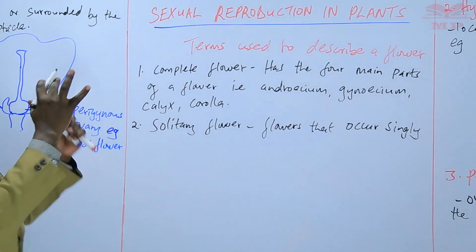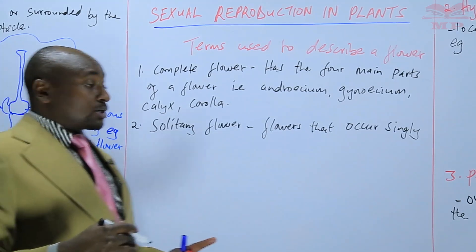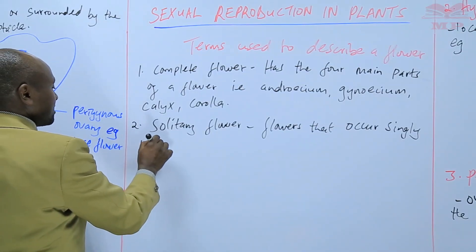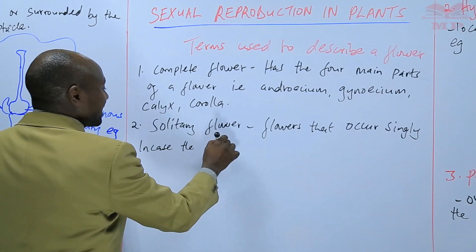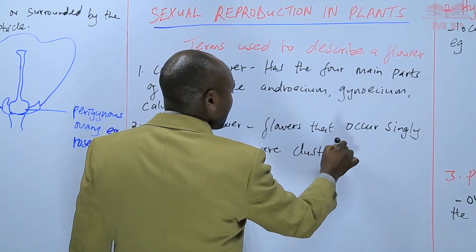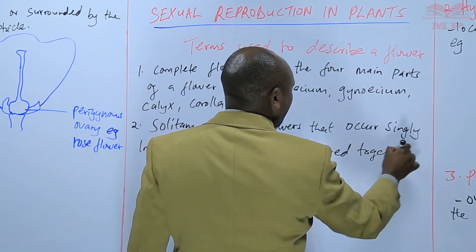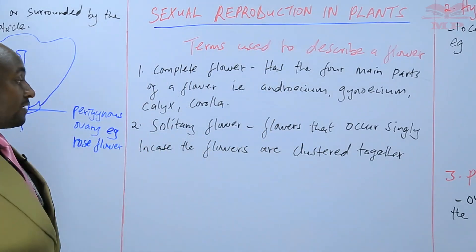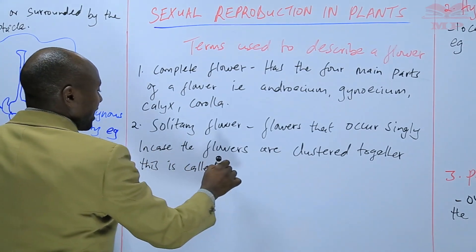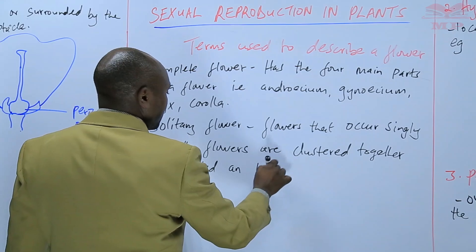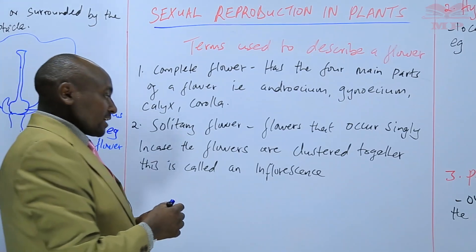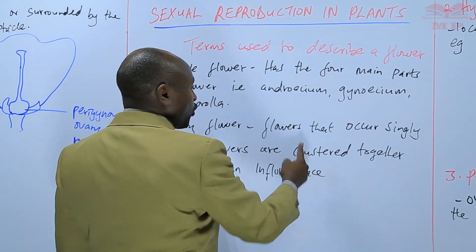With hibiscus you find the flowers are single, so we refer to that flower as being a solitary flower. In case the flowers are clustered together — meaning there are many clustered together — for example the bougainvillea, this is called an inflorescence. Flowers that are clustered together form an inflorescence, but if the flowers are occurring singly, we refer to that as being a solitary flower.